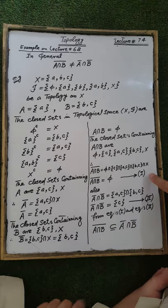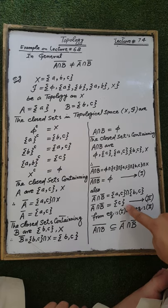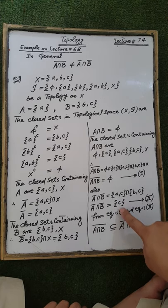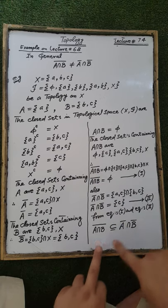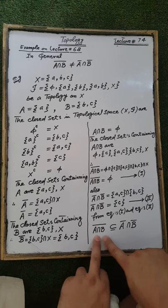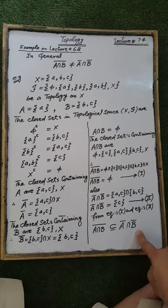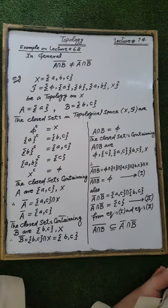Now, the intersection of the closure of A and the closure of B is the set containing element C. And from equations first and second, the empty set is a subset of every possible set — that is, the empty set is a subset of the set containing element C. Therefore, the closure of A intersection B is a subset of the closure of A intersection the closure of B.